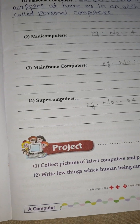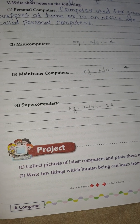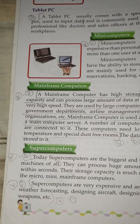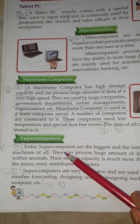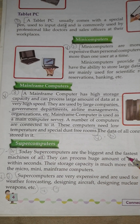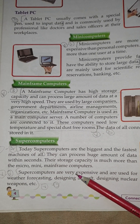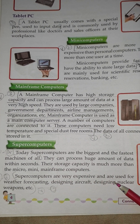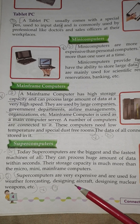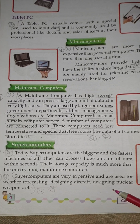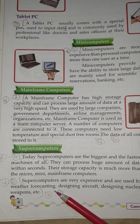Question number 4 — Super Computer: Today's supercomputers are the biggest and the fastest machines of all. Supercomputers are very expensive and are used for weather forecasting, designing aircraft, designing nuclear weapons, etc.